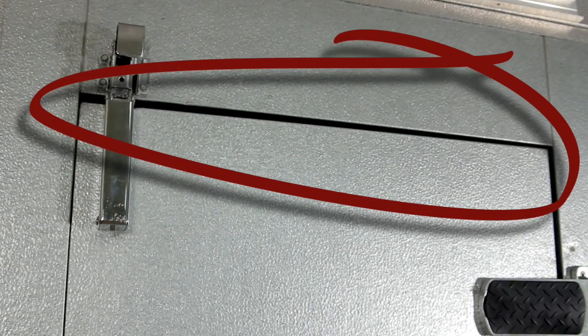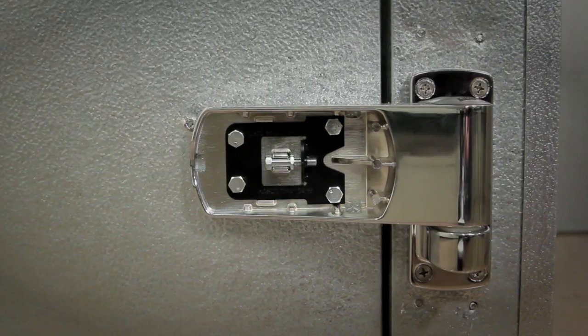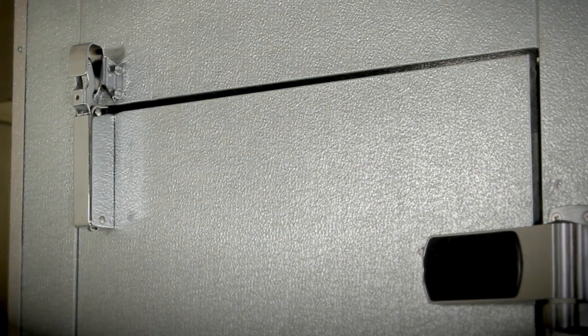Over time as the door sags, you can quickly and easily adjust the Performer hinge, re-squaring the door so there's a tight seal.